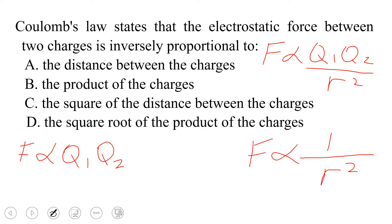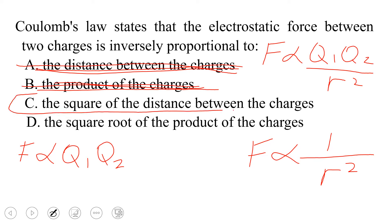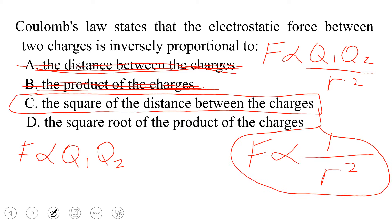Now let's look at the options. Option A says the force is inversely proportional to the distance between the charges — that is wrong; it is not distance but the square of distance, so A is out. Option B says inversely proportional to the product of the charges — no, we know the force is directly proportional to the product of charges, not inversely, so B is out. Option C: inversely proportional to the square of the distance between the charges — yes, that agrees with what we have written. Option D says the square root of the product of the charges — that is wrong and unacceptable. So option C takes it again.